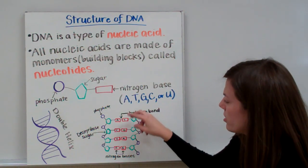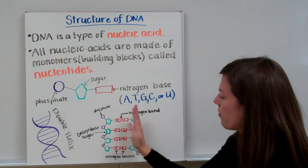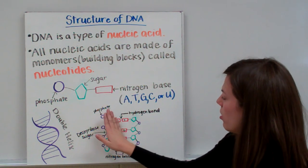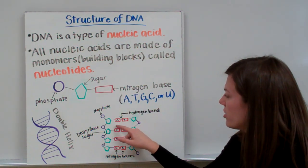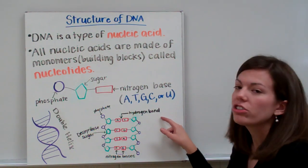We have the red nitrogen bases in the center. So we have one strand of DNA hooked to another strand of DNA. There's a special bond that hooks those red nitrogen bases together. That's called a hydrogen bond.